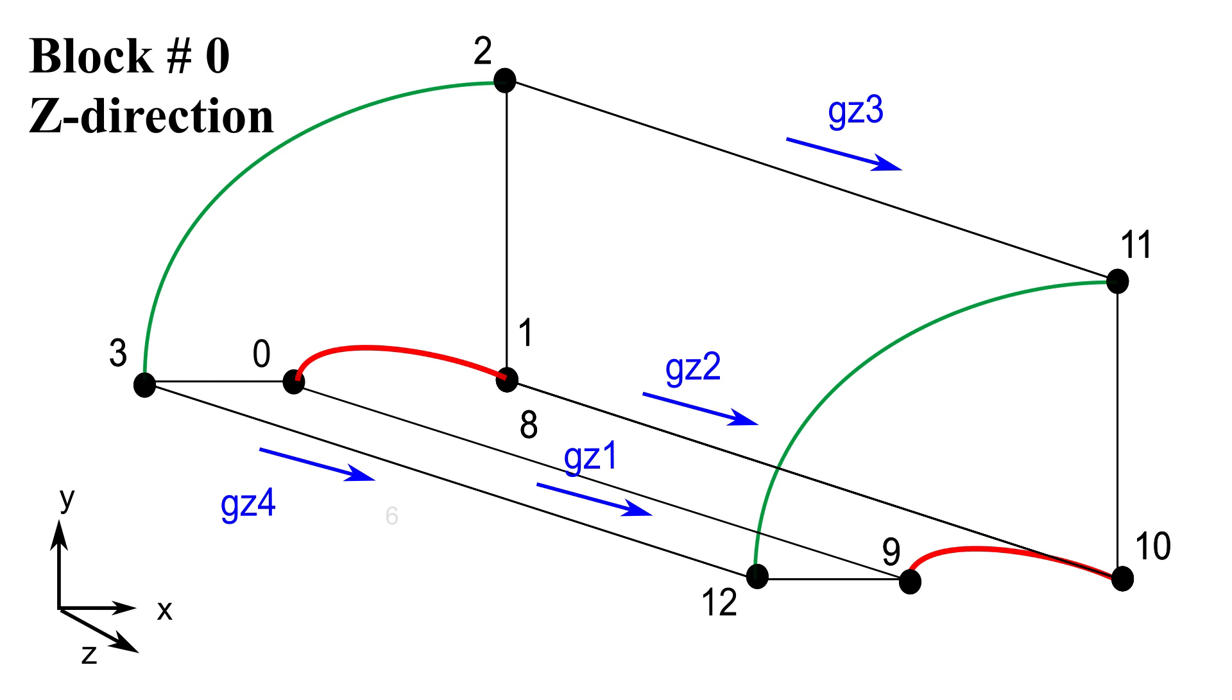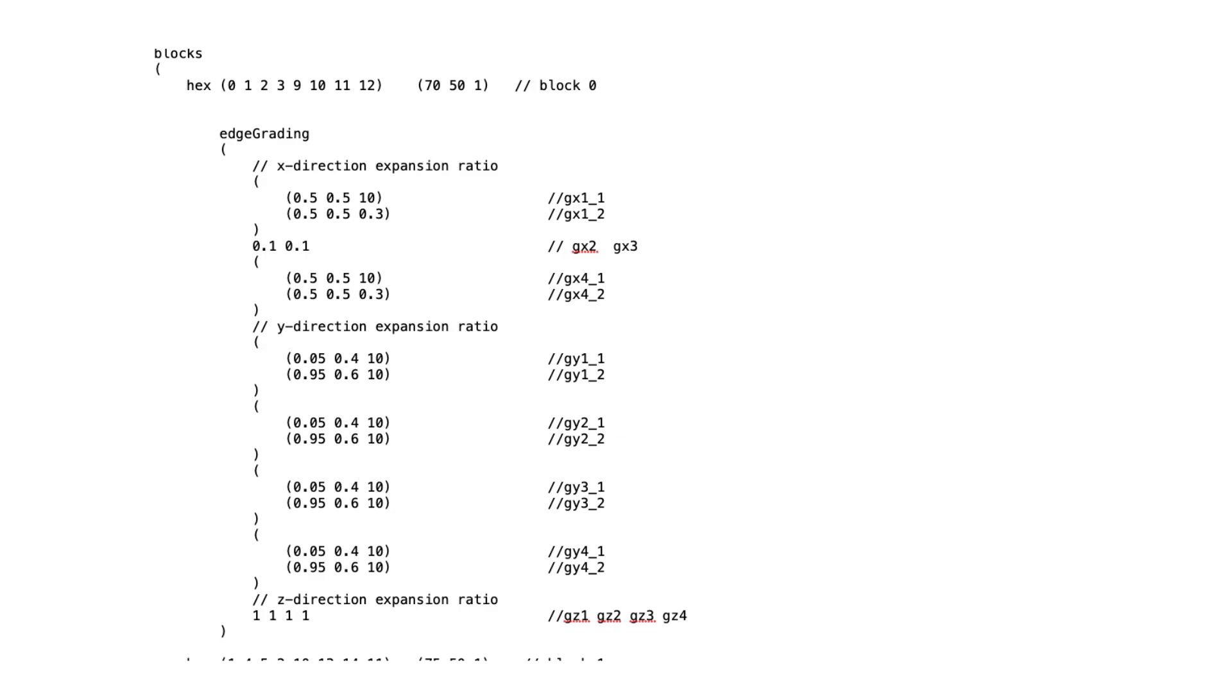Regarding the Z-direction edges, we will use a uniform distribution, so we will set the grading value to 1. Since we are running a 2D simulation, we only need one cell in Z-direction with uniform spacing. And here is how to implement the Z edge cell distribution directly in the BlockMeshDict file.